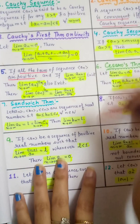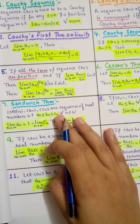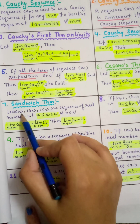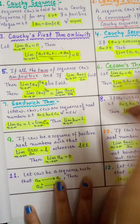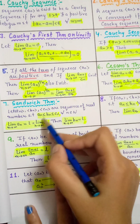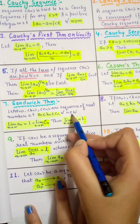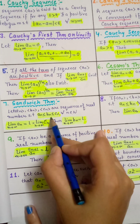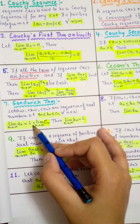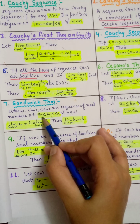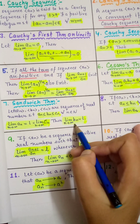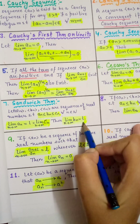Next is the sandwich theorem, which is a most important theorem. If AN, BN, CN are sequences of real numbers such that AN ≤ BN ≤ CN for all N belonging to the natural numbers, and if the limit of AN and the limit of CN are both equal to L, then the limit of BN is also L.